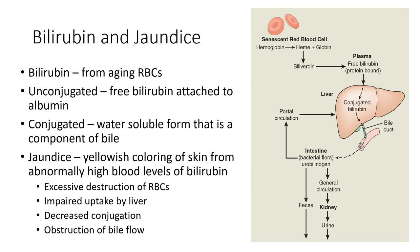Bilirubin is the final product of the breakdown of heme contained in our aging red blood cells, and we break down our red blood cells every 90 to 120 days. Bilirubin is the substance that gives bile its dark color. In the process of degradation, hemoglobin from the red blood cell is broken down to form biliverdin, which is then converted into free bilirubin. Free bilirubin is insoluble in plasma, so it's transported in the blood attached to plasma albumin. Even when it's bound to albumin, this bilirubin is still called free to distinguish it from conjugated bilirubin. As free bilirubin passes through the liver, it's absorbed through the hepatocyte cell membrane and then converted into conjugated bilirubin, which makes it soluble in bile.